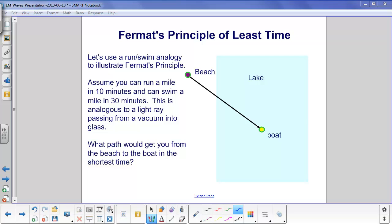We're going to use an analogy to illustrate Fermat's principle. We'll start with a beach with a person here, a lake, and a boat. The person can run a mile on the beach in 10 minutes and swim a mile in 30 minutes, so he's clearly faster on shore. The analogy is that the beach represents light traveling in a vacuum or air, and the lake represents light traveling through glass. The question is, which path would get you from the beach to the boat in the shortest time?